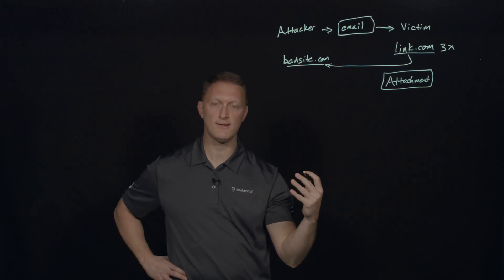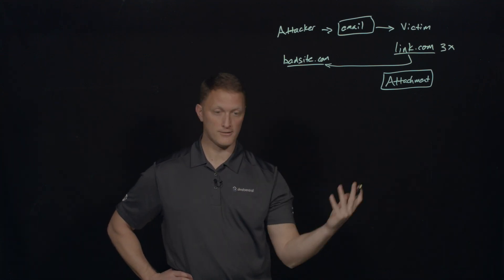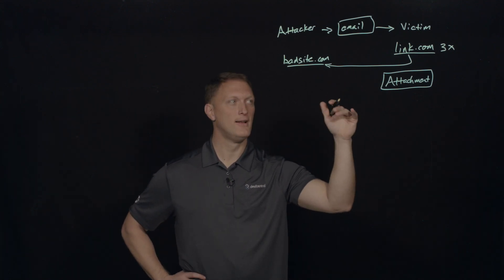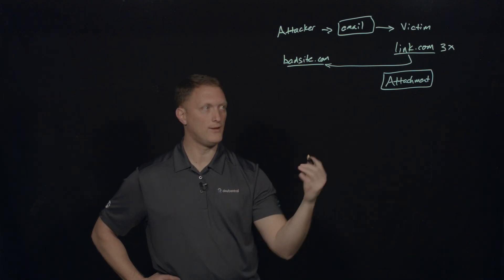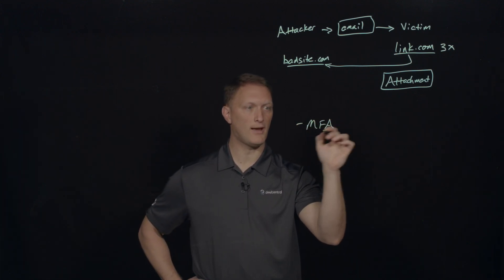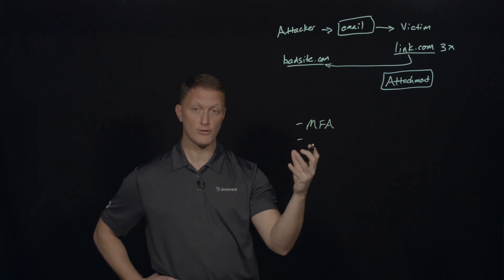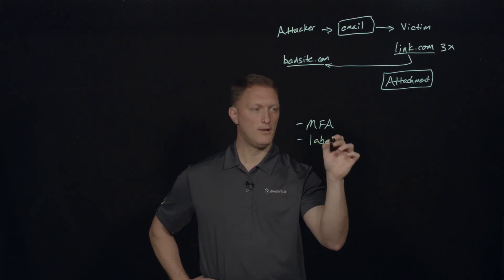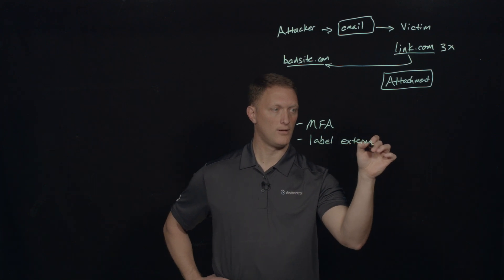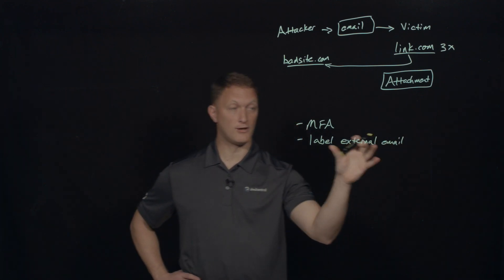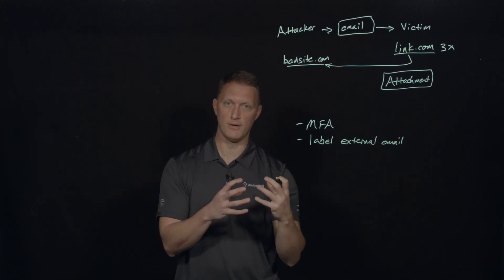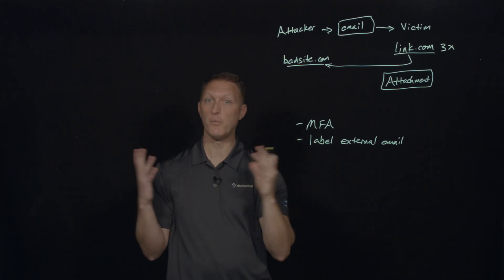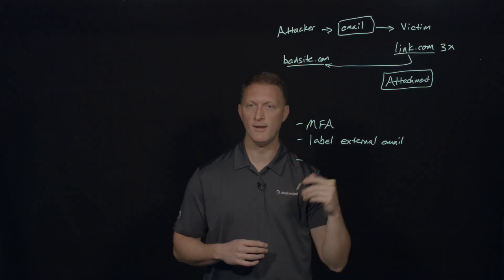Some things you can do to guard against this: number one, train your employees. It's always a good idea to tell employees, 'Don't click on malicious links — try to figure out if it's malicious or not. Don't open an attachment if you don't know who sent it.' Multi-factor authentication is also a good idea to introduce into your environment for a whole host of reasons. And labeling external emails is a good thing — if it comes from some domain outside of your own email, you can label it as an external source. There are a lot of different tools you can use to label these external emails.